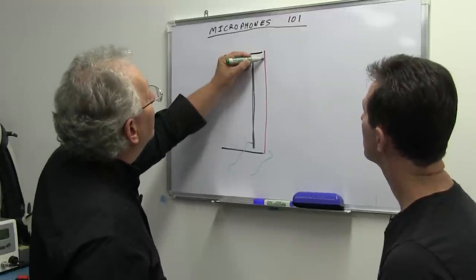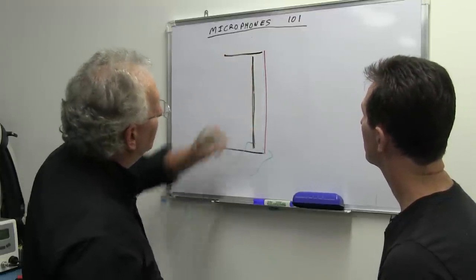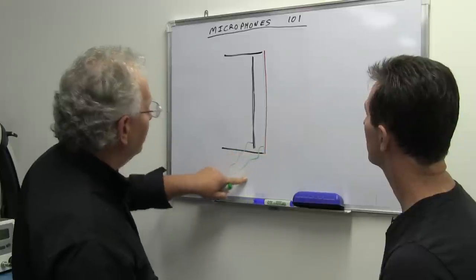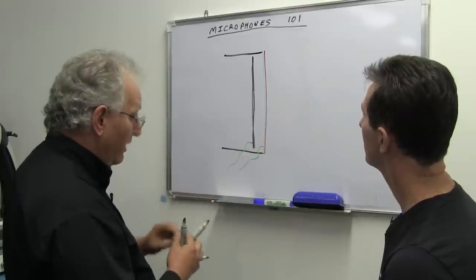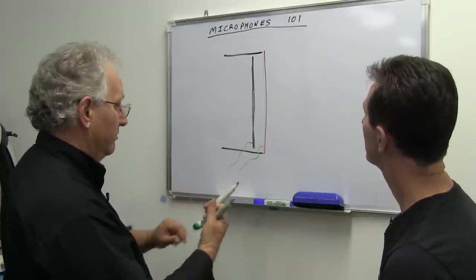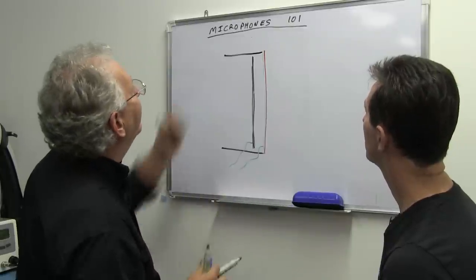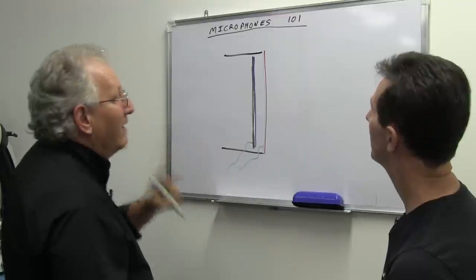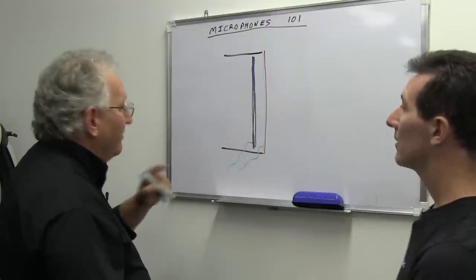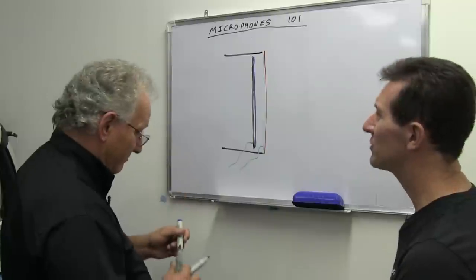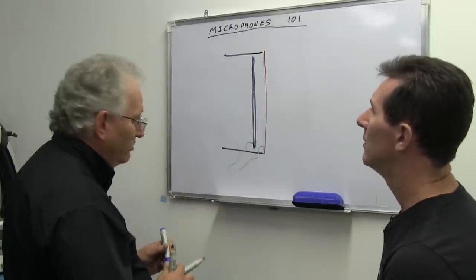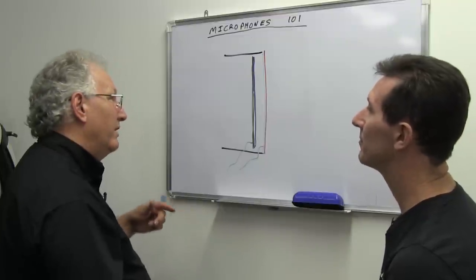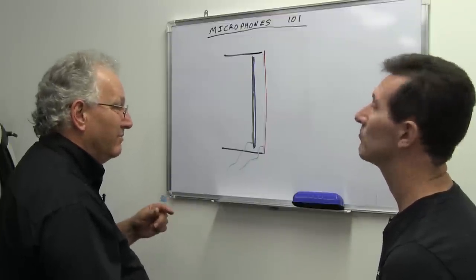And where do we put our electret material? We put the electret material there. That's called a back electret. Do they advertise them as that or you just don't know? Usually if you're buying them from a hobbyist shop, you don't know. If you're buying them from a manufacturer, they'll tell you.